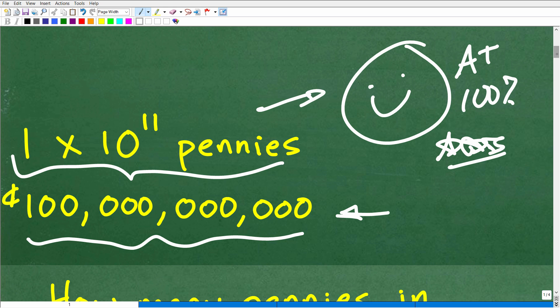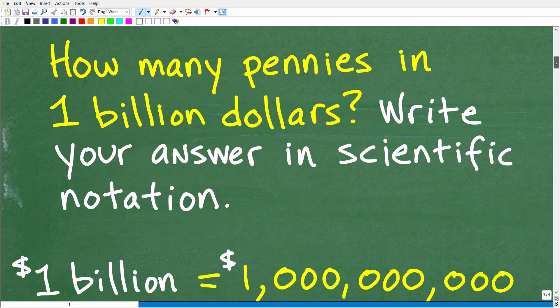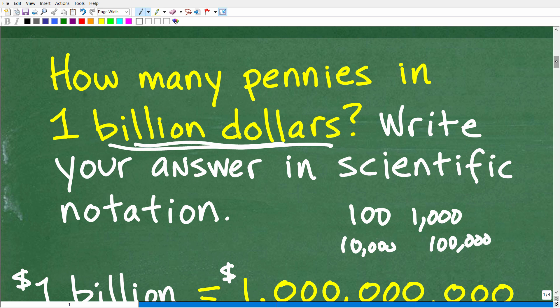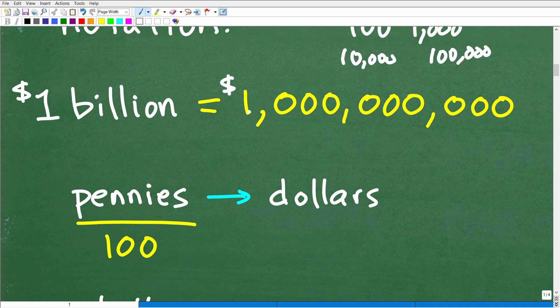If you got this right, even without the scientific notation part, you deserve a happy face, an A plus, and multiple stars. Let's get into this problem. First, we need to understand what is one billion dollars. A billion is one with nine zeros: 1,000,000,000. This is a billion dollars, or one billion mathematically. It is a very large number.